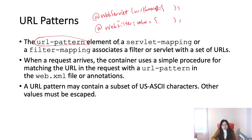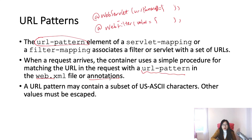The URL pattern element of a servlet mapping or filter mapping associates a filter or servlet with a set of URLs. So when a request arrives, which servlet or which filter the request will go through, the container will use a procedure for mapping the URL in the request with the URL pattern in the web.xml or annotation. When we talk about the URL, it's a subset of ASCII characters, and for any other values it will be escaped.